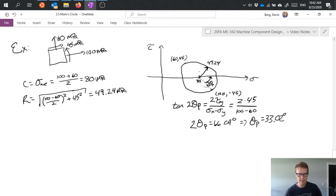So what this means is that I have to rotate 66 degrees to get from this orientation to the max stress which of course is out here on my Mohr circle.